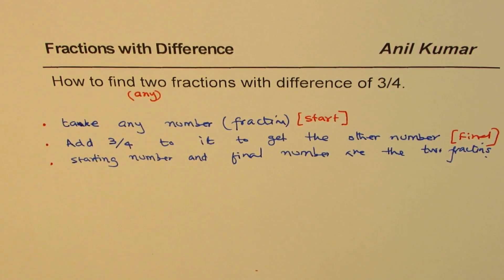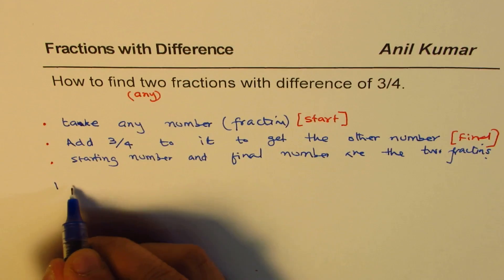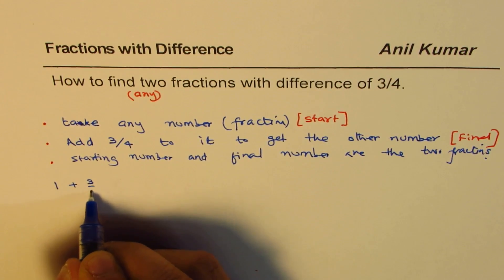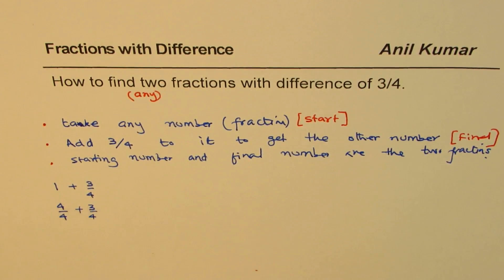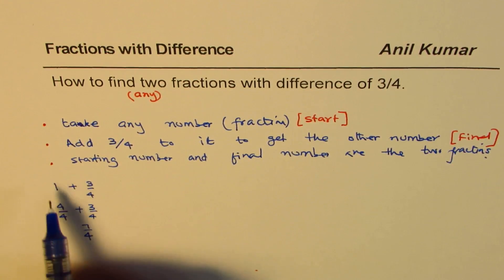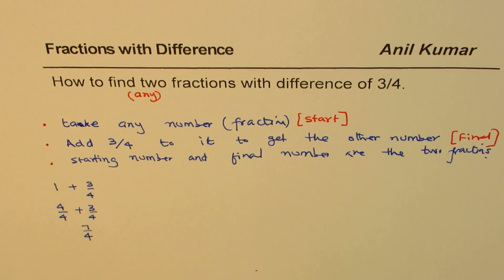So, let's take up examples now. So, let us say we start at 1, and then we add 3 by 4. If I do that, I could do, 1 could be written as 4 over 4, plus 3 over 4. And that is 4 plus 3 is 7. So, we get 7 over 4. So, we get 7 over 4.